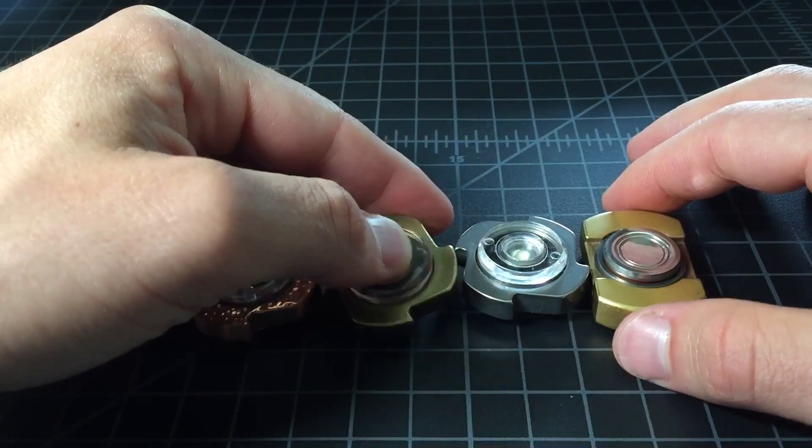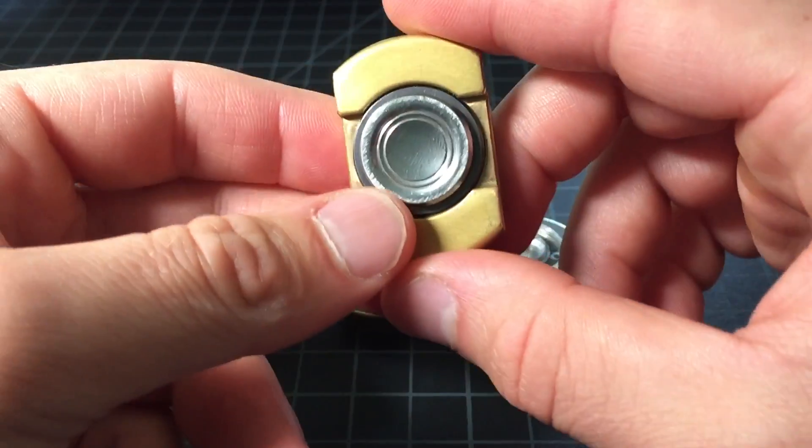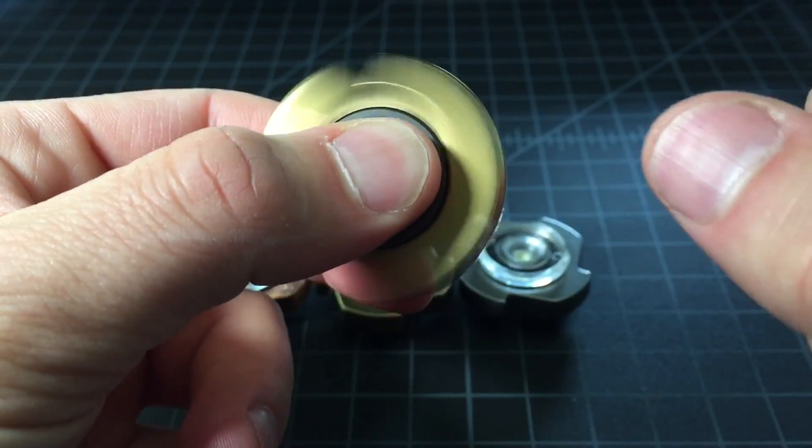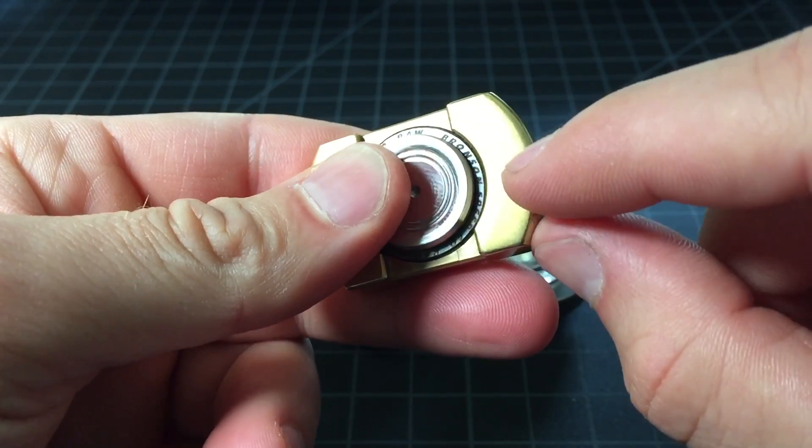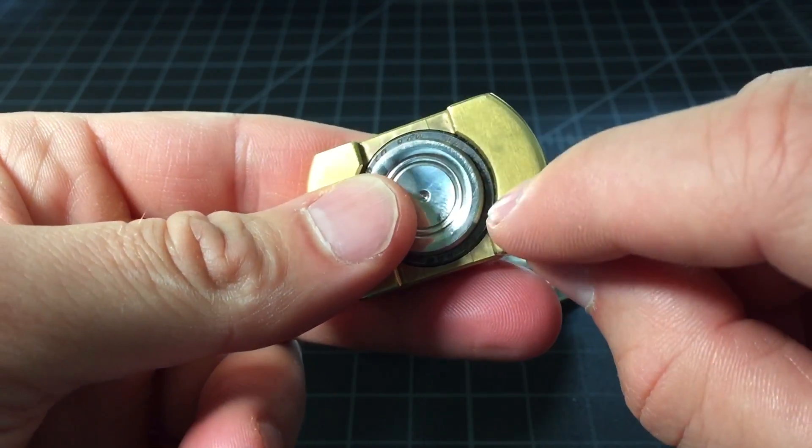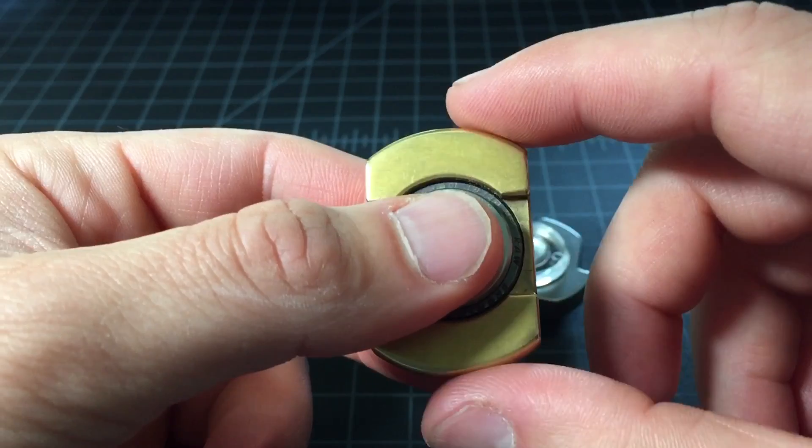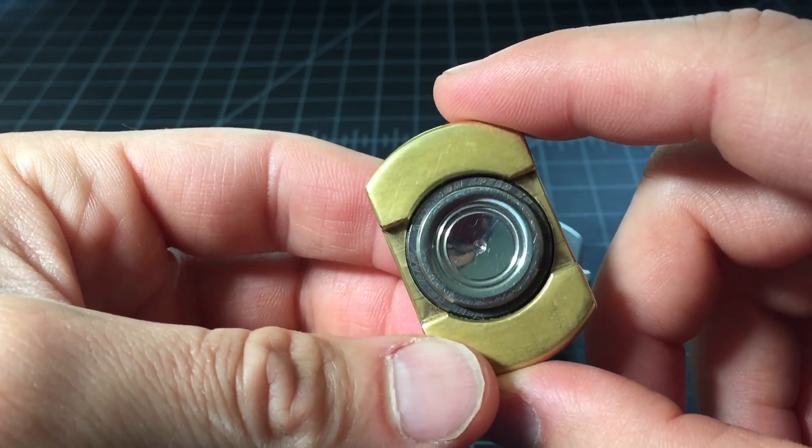So the dabs have four different bearing types. This is obviously not a dab. It's a Vorsto flat top, but I put my favorite dab bearing in there. That is the Bronson Speedco raw bearing.